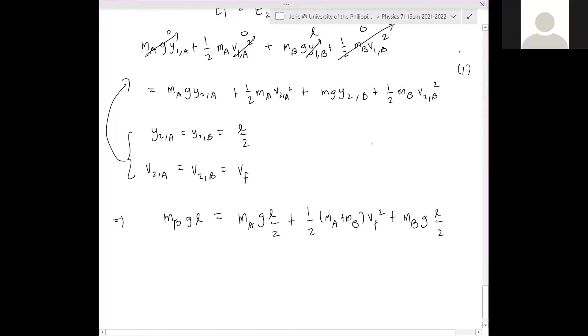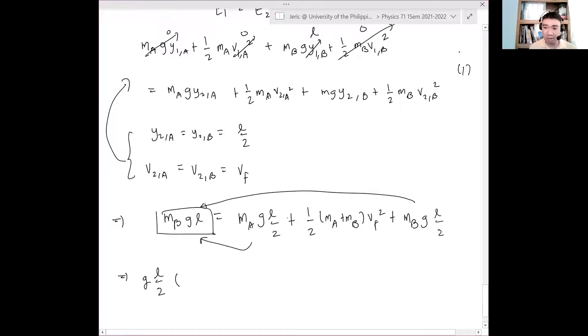Since the acceleration is constant, the time is constant, then v2a speed equals v2b, which is just equal to some final velocity. By doing so, combining these two equations, this is equation one, we have MB g L equals MA g L over 2, plus one half quantity MA plus MB v final squared, plus MB g L over 2.